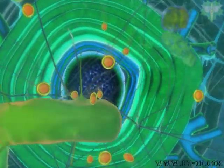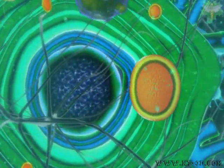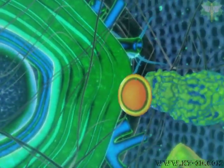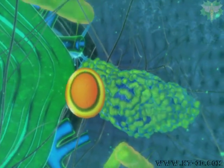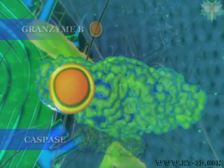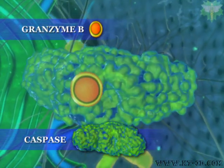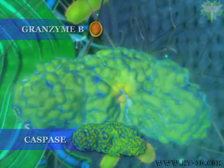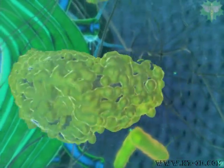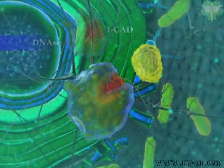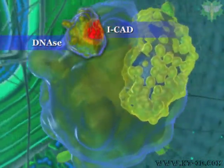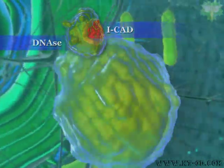The process of cancer cell death initiated by the granzymes uses part of the same basic machinery that gives rise to programmed cell death, or apoptosis. In this application, one granzyme, granzyme B, activates a caspase, which then cleaves I-CAD, the inhibitor of caspase-activated DNA ACE.